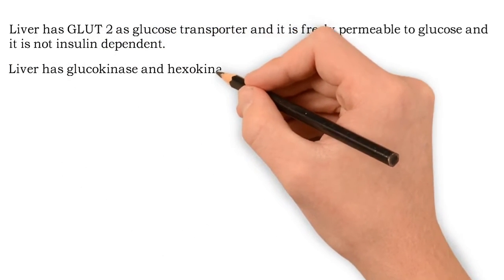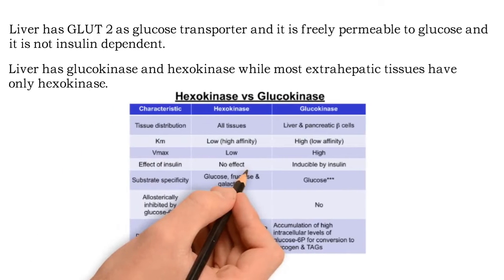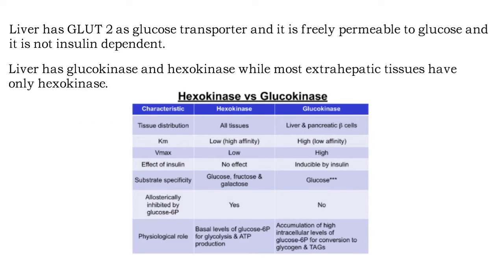The liver has both glucokinase and hexokinase, while most extra-hepatic tissues have only hexokinase. Hexokinase is saturable, has low KM for glucose, and is inhibited by glucose 6-phosphate. Due to the properties of glucokinase, the liver continues to have high glucose uptake during hyperglycemia following meals, while uptake by extra-hepatic tissues is product-feedback inhibited due to accumulation of glucose 6-phosphate even when insulin is present. At high blood glucose concentration, the liver has net uptake of glucose, and is a net producer of glucose by glycogenolysis and gluconeogenesis at low or normal blood glucose concentration.